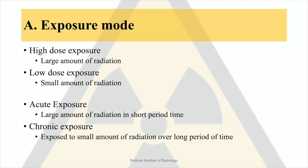Another way to describe radiation exposure is acute versus chronic. Acute exposure involves a large amount of radiation in a short time, such as in radiation therapy, industrial accidents, or military uses of nuclear energy.